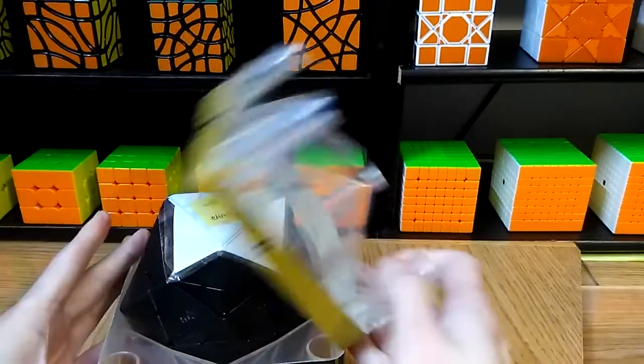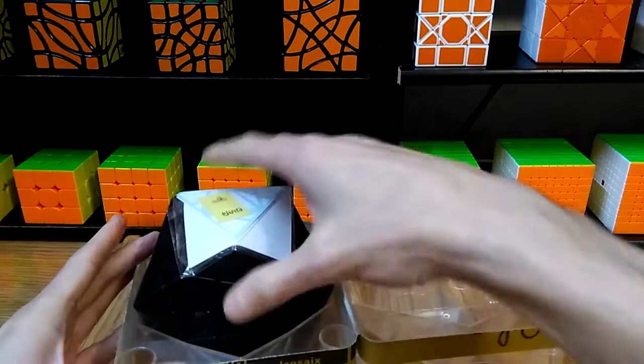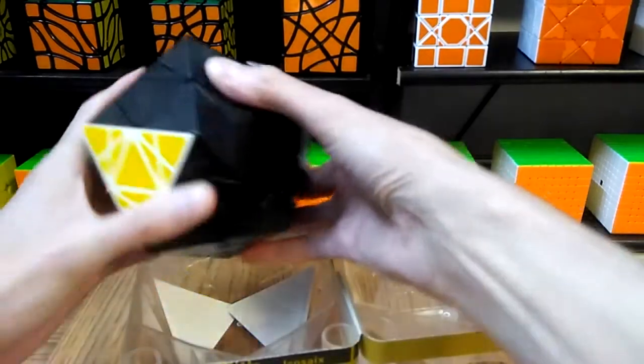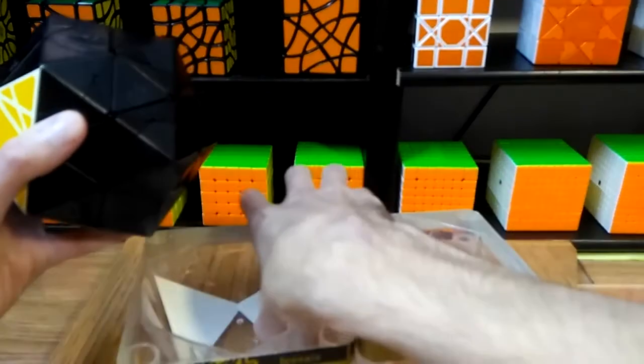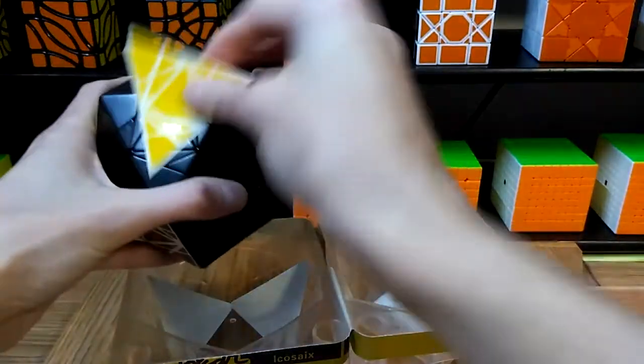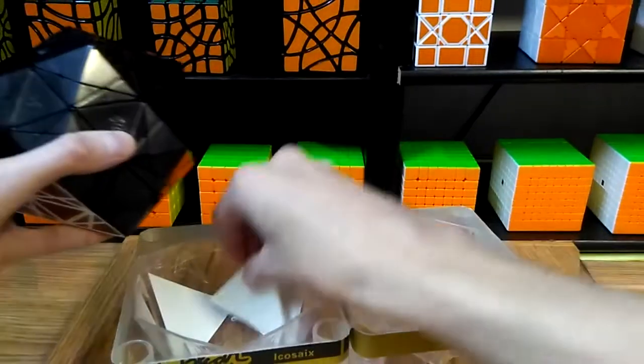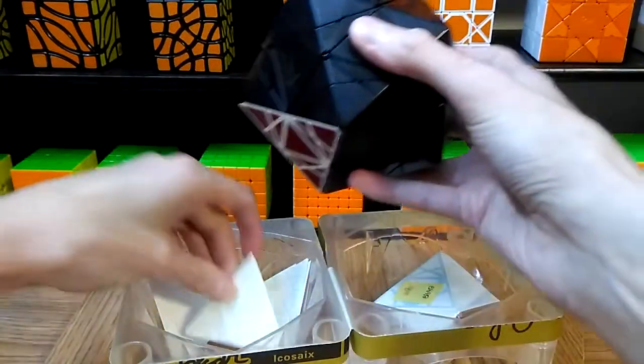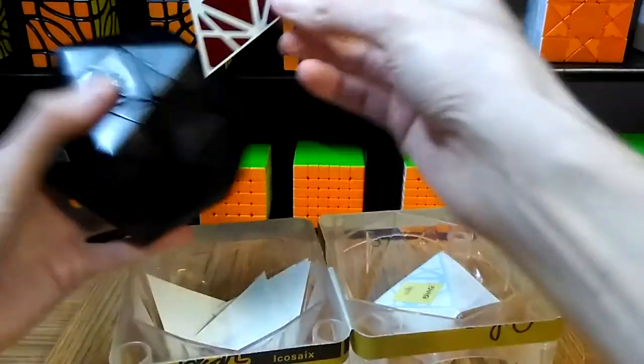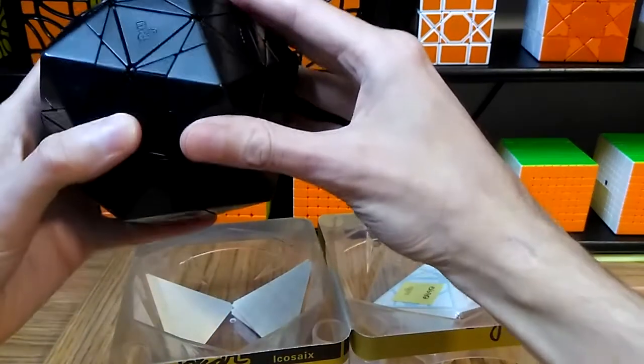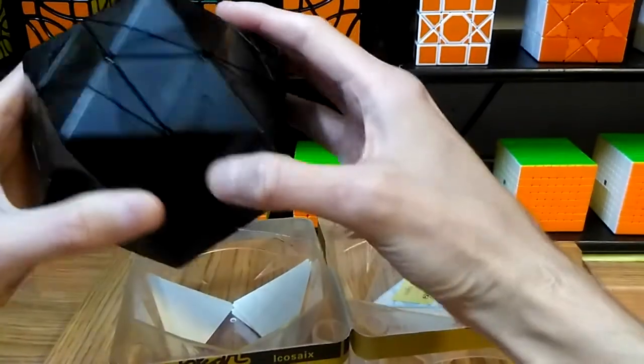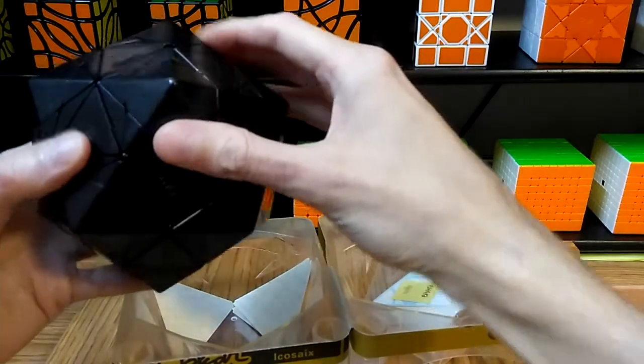This is a face-turning icosahedron puzzle, so 20 sides, and you get to do all the stickering yourself. It comes with all the lovely stickers so you get to decide where you want the colors to go and how you want your design laid out. I'll do that obviously in a little while, but 20 faces here and a nice deep cut.